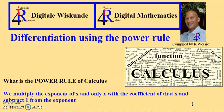What is the power rule? Power rule is when we multiply the exponent of x with the coefficient of x and then subtract 1 from the exponent.